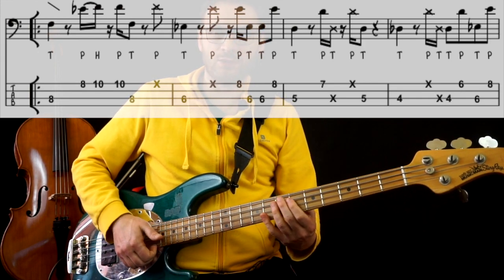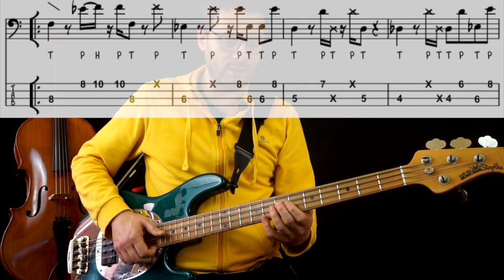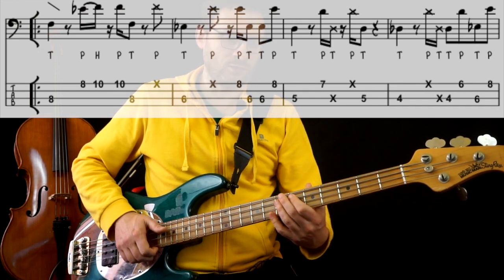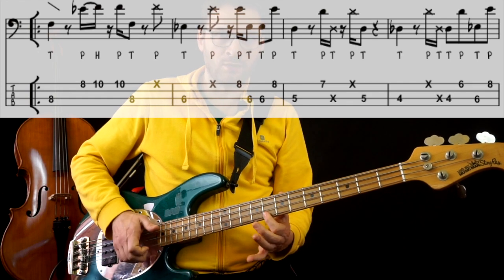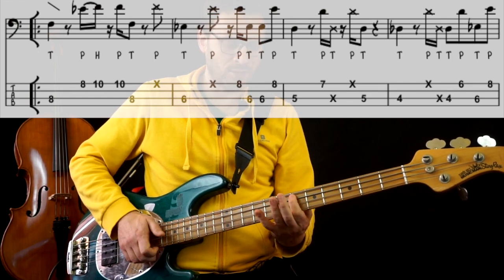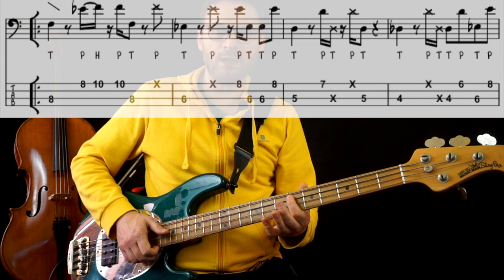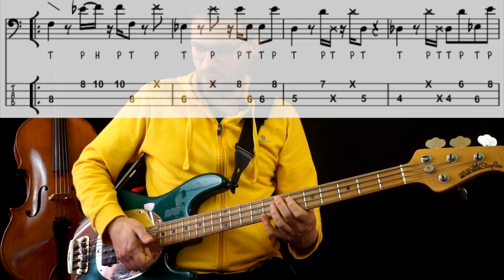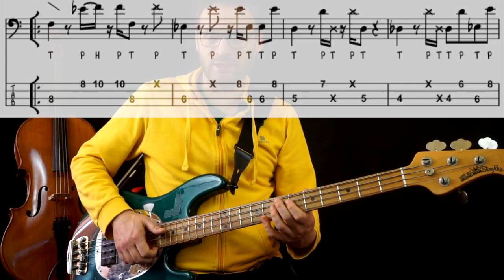To transition to E♭ I use a ghost note on the upbeat of the fourth beat. E♭ adds a ghost pluck on the eighth note upbeat.